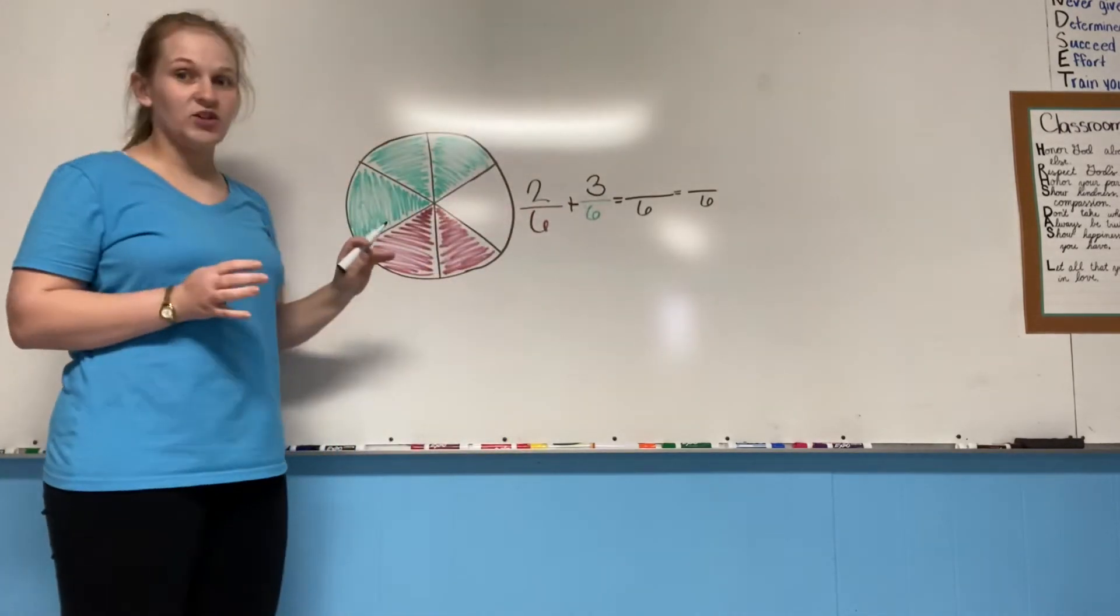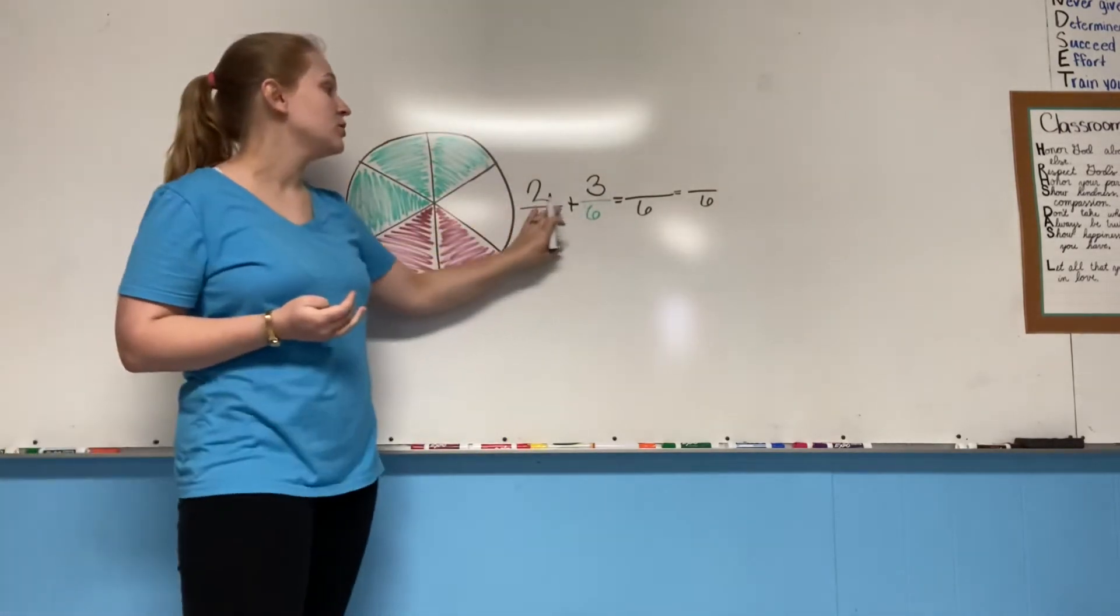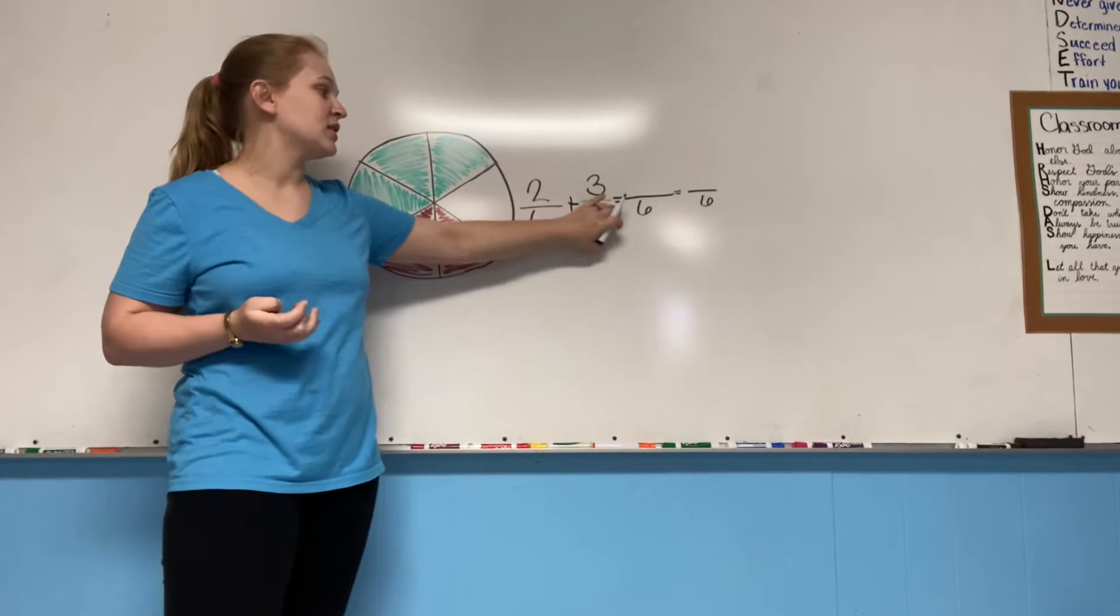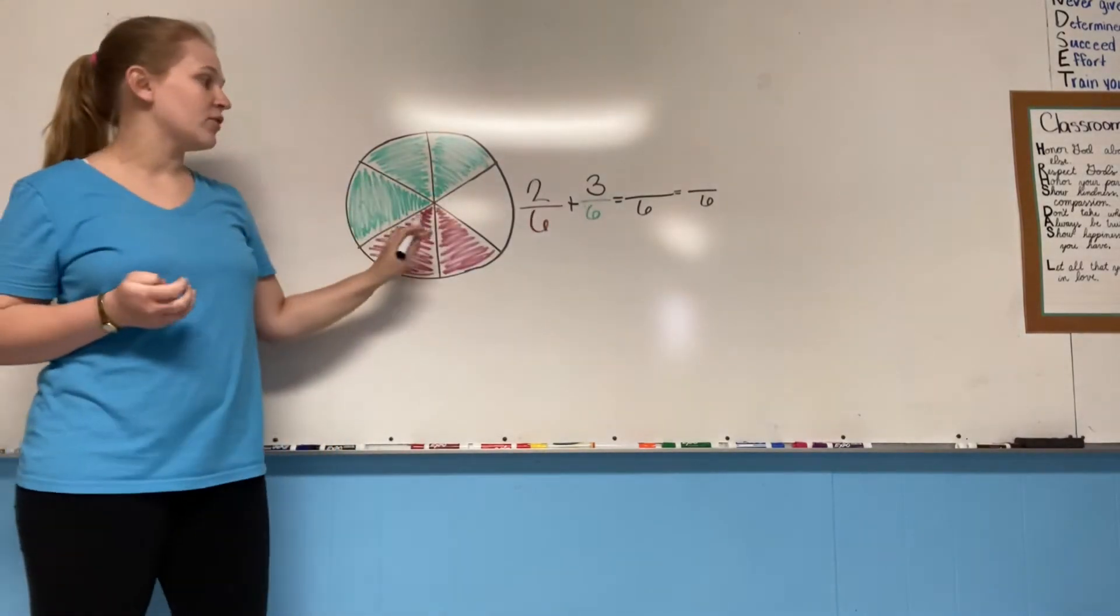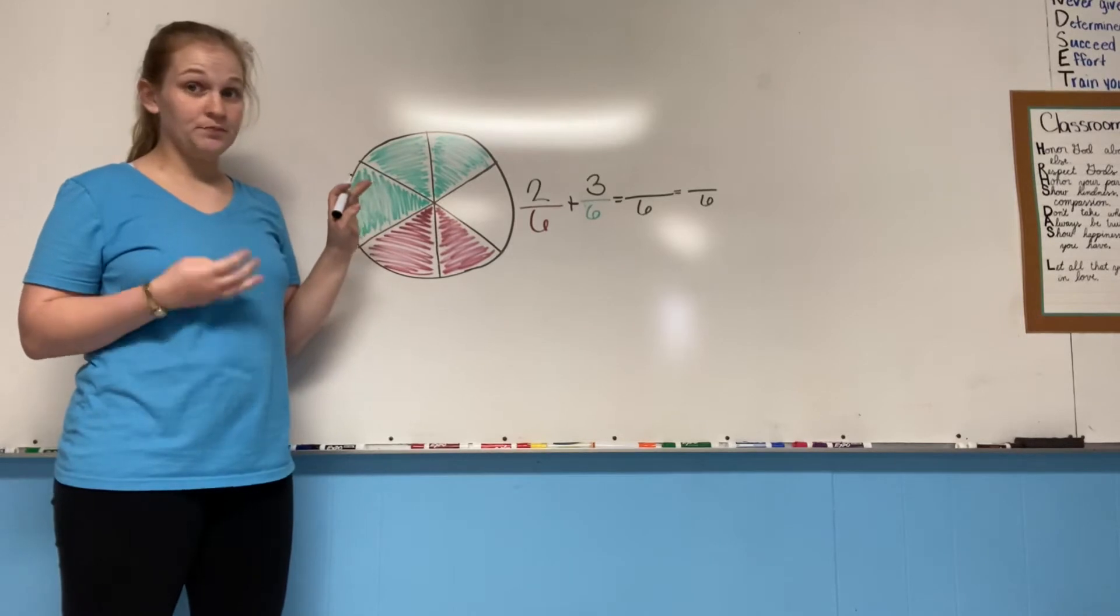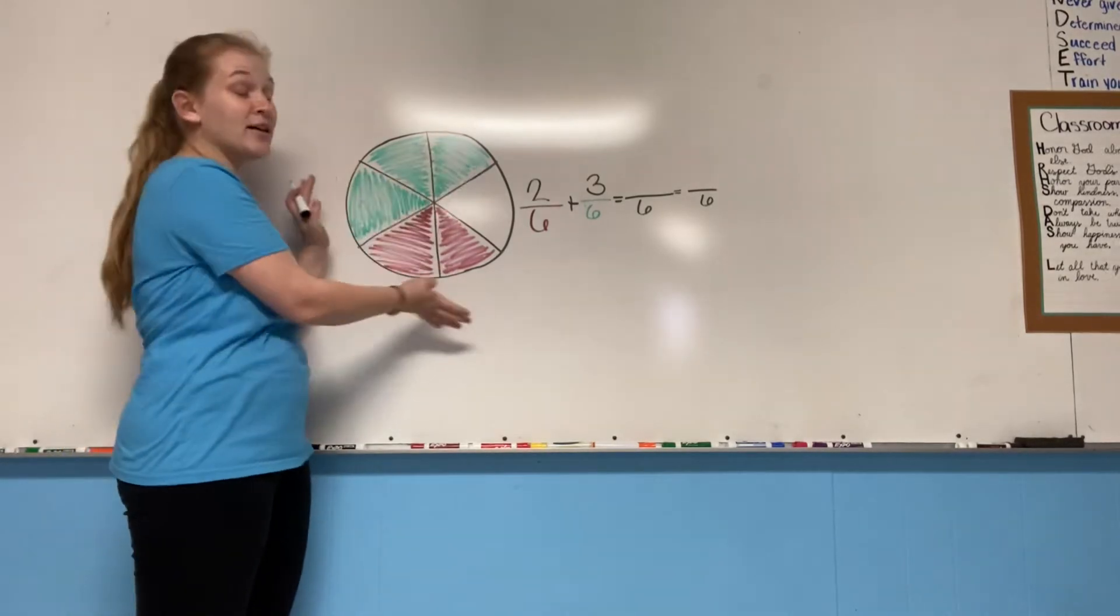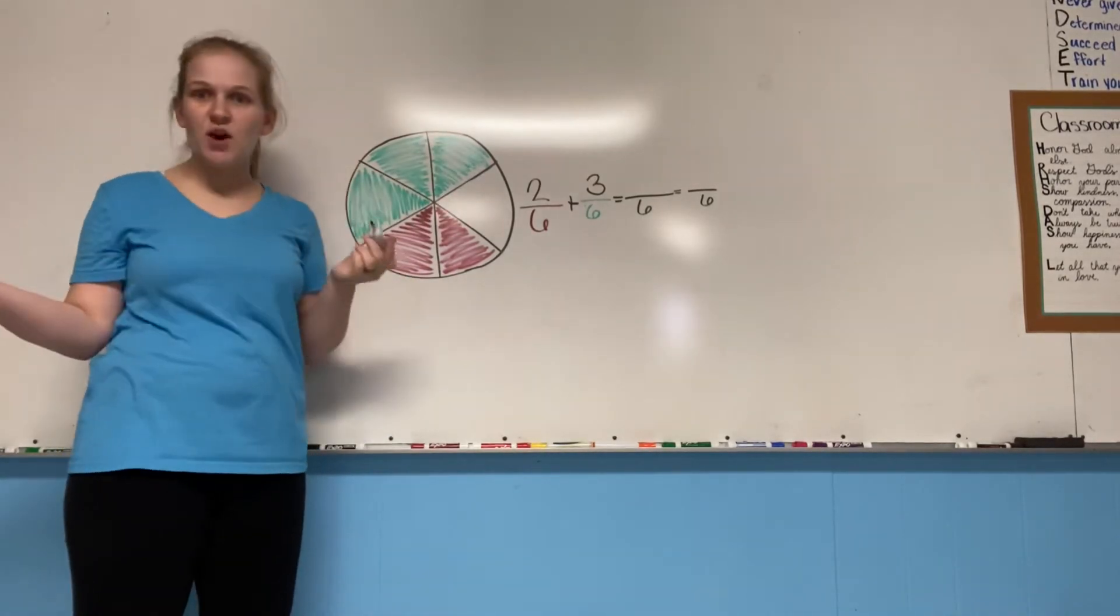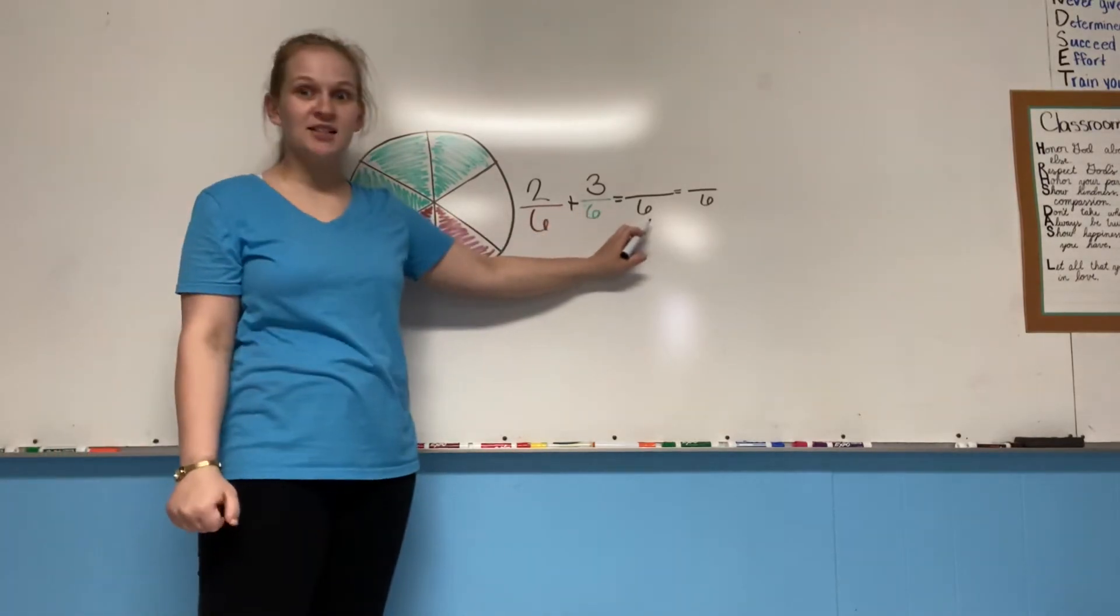So to add fractions, what we're going to do is add the two sixths plus the three sixths. Now when we add these parts together, is the number in the denominator going to change? Did the number of possible parts change? No. So the denominator stays the same.